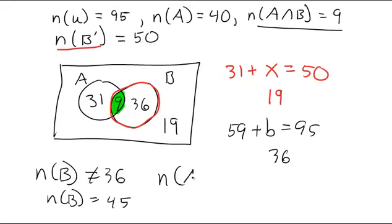Maybe they ask for the number of things in A or B, right, the union. So you would do 31 plus 9 plus 36, so that's 40, 76.